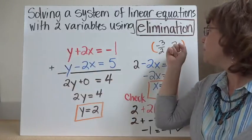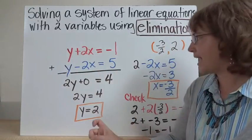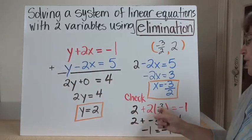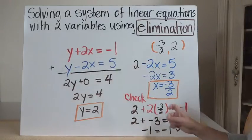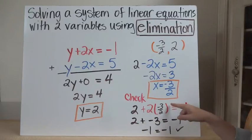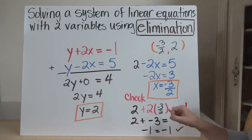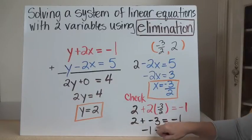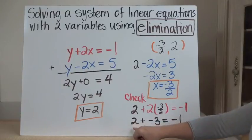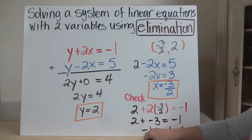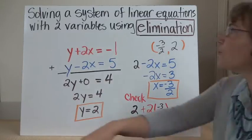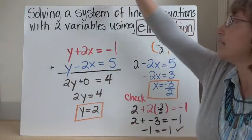So instead of y, I'm going to put a 2, and instead of x, I'm going to put negative 3 halves. So I have 2 plus 2 times negative 3 halves, which equals negative 1. I can think of that as 2 over 1 — those 2's cancel and I just have negative 3 left. So 2 plus negative 3 is negative 1, and that equals negative 1. Check — yes, that works for both of my lines. That's where these two lines intersect.